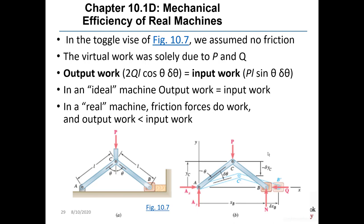Now we'll look at the mechanical efficiency of real machines. In the toggle vise of figure 10.7, assuming no friction, the virtual work was solely due to P and Q, such that the output work 2QL cos θ dθ equaled the input work PL sin θ dθ. In an ideal frictionless machine, output work equals input work. But in a real machine, friction forces do work and the output work is always less than the input work.